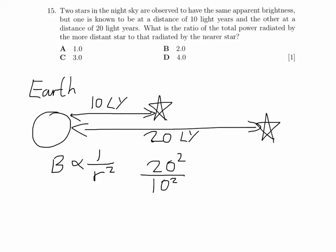Which gives us 400 divided by 100, which gives us a ratio of 4. So that's answer D.